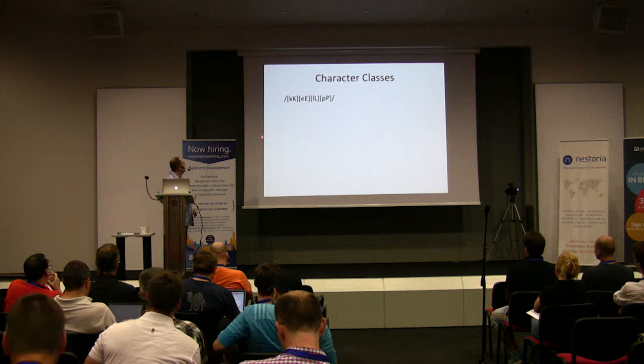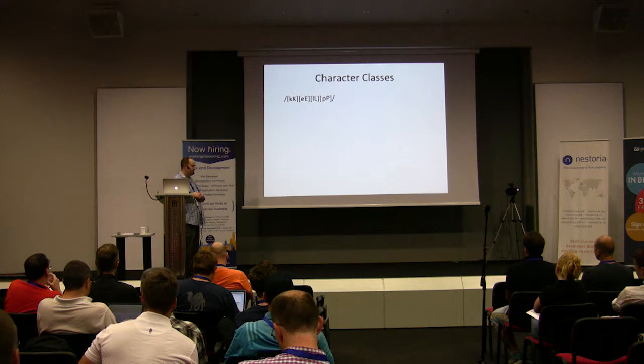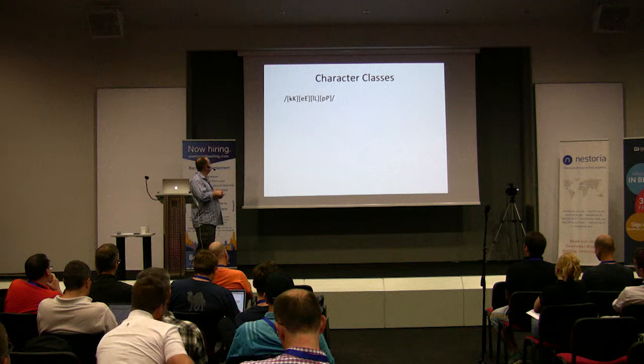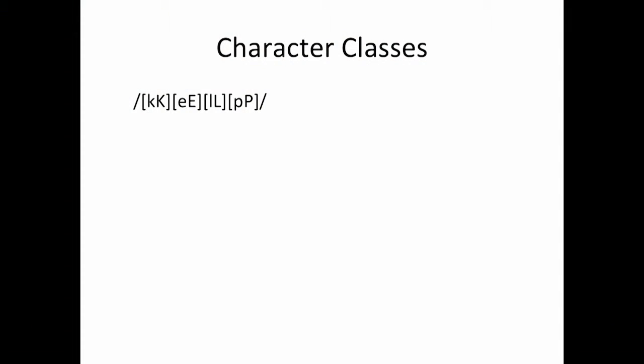Here's an example of a character class. Character classes are nice — we can use them if we want to find a particular range of things. This one: I'm looking for the word 'kelp,' so I can have a small K or big K, a small or large E, a small or large L, a small or large P. This is one way to look for the word kelp using character classes. Each bracket picks either one of these characters, followed by either one of those, and so on — if any of those conditions match, we get a true value.